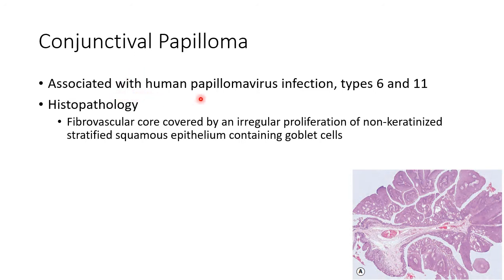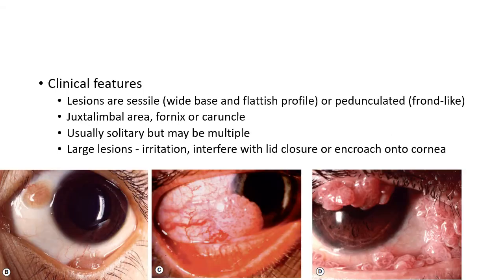Conjunctival papilloma is associated with human papilloma virus infection types 6 and 11. Histopathology shows a fibrovascular core covered by irregular proliferation of non-keratinized stratified squamous epithelium which contains goblet cells.